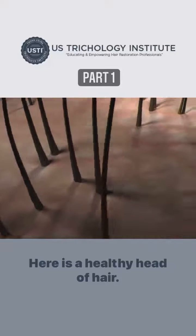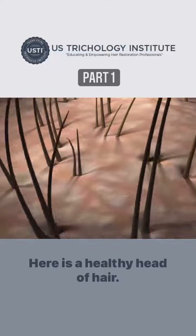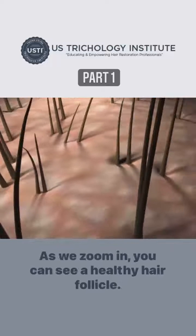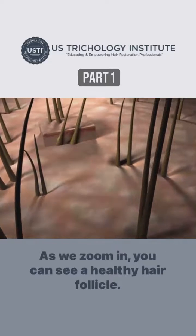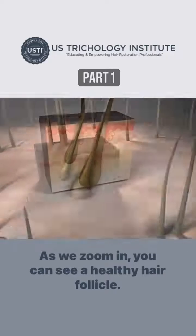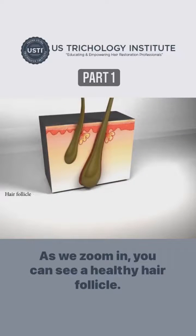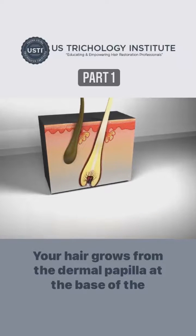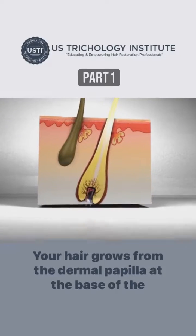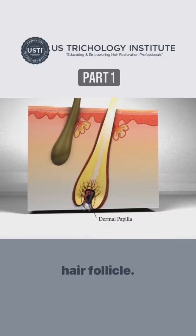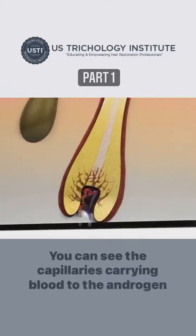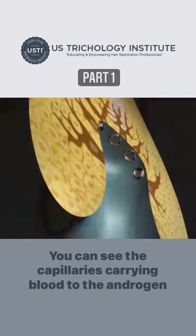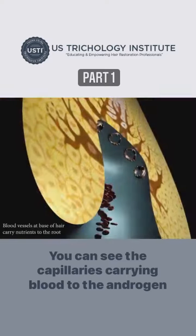Here is a healthy head of hair. As we zoom in, you can see a healthy hair follicle. Your hair grows from the dermal papilla at the base of the hair follicle. You can see the capillaries carrying blood to the androgen receptors.